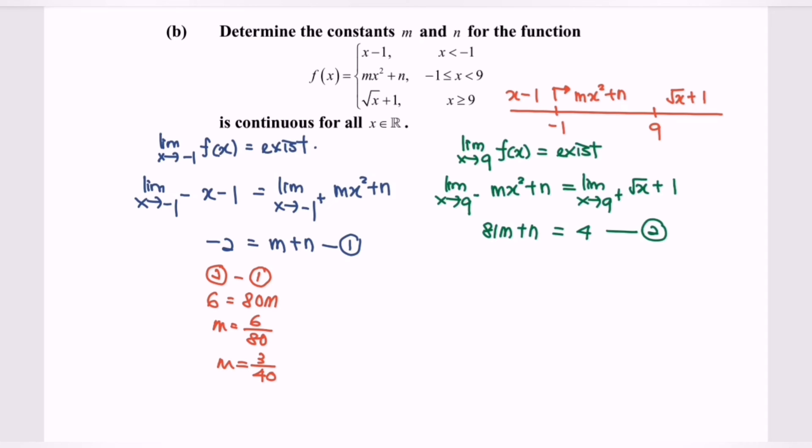Substitute the value of m into the first equation and we will have negative 2 equals 3 over 40 plus n. Rearrange the situation.